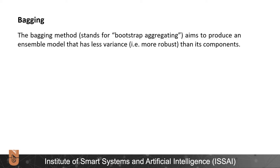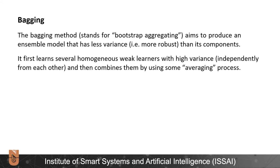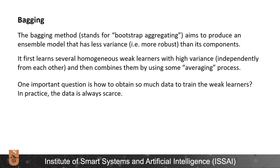The bagging method, which stands for bootstrap aggregating, aims to produce an ensemble model that has less variance than its components. It first learns several homogeneous weak learners with high variance, and then combines them by using some averaging process. One important question is how to obtain so much data to train the weak learners, because in practice the data is always insufficient. The solution is to use bootstrapping.